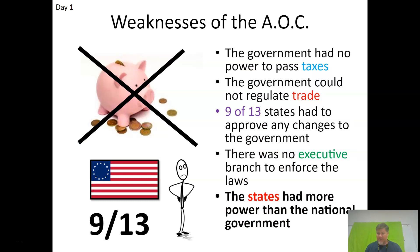Those weaknesses include: they can't collect taxes, and everything a government does requires money — so that's a huge problem. They couldn't regulate trade. To make a change, it took a supermajority — nine out of thirteen states had to approve it, which was very difficult. There was no executive branch, and most importantly, the states had more power than the national government. These weaknesses ultimately made the Articles of Confederation unworkable as a government.